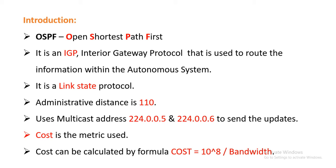OSPF is a link state protocol. In a link state protocol, all the routers in the network maintain the entire topology of the network. Unlike distance vector routing protocol, it will not flood the routing information at every regular interval of time. As it is a link state protocol, routing information is shared only when there are changes in the network. It is more efficient than the distance vector protocol.